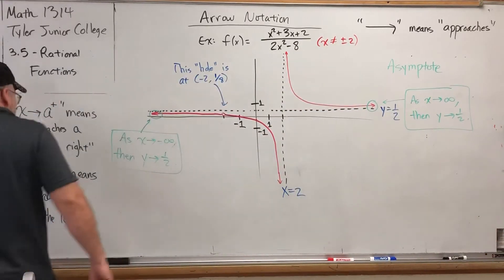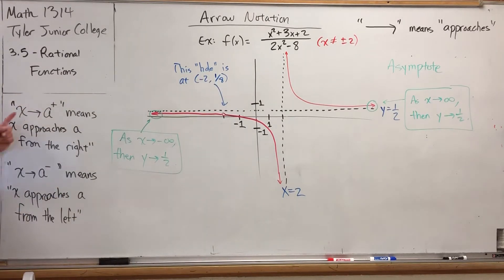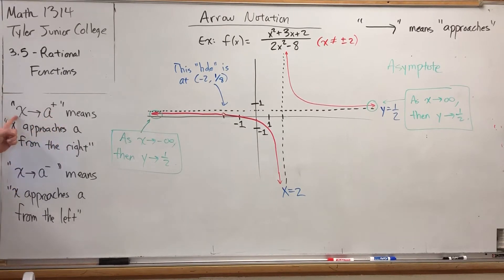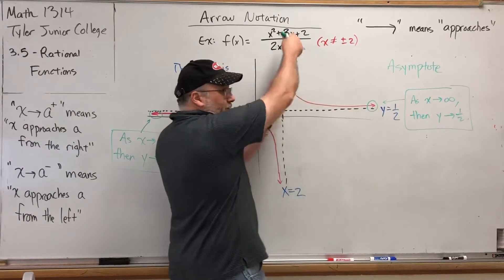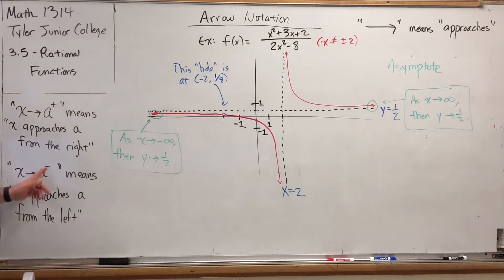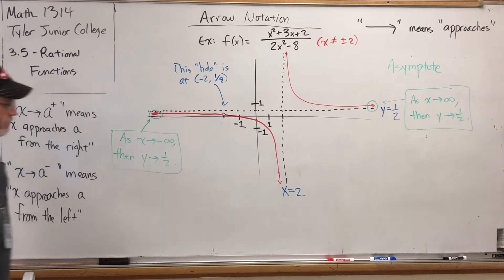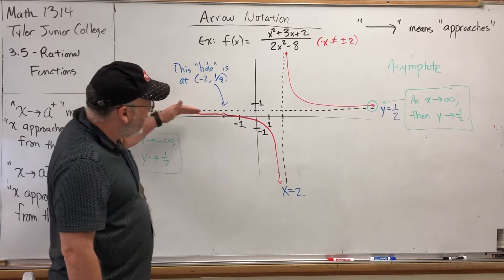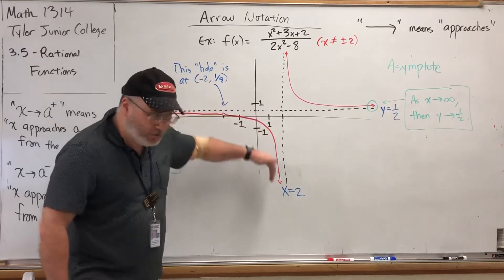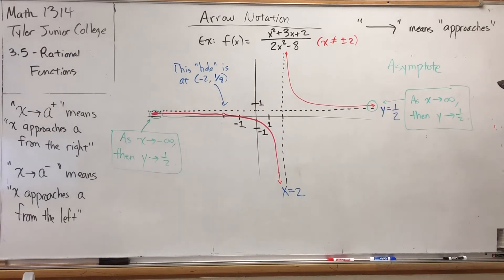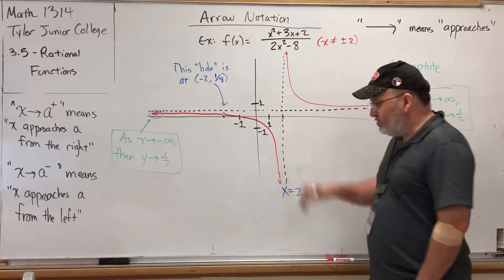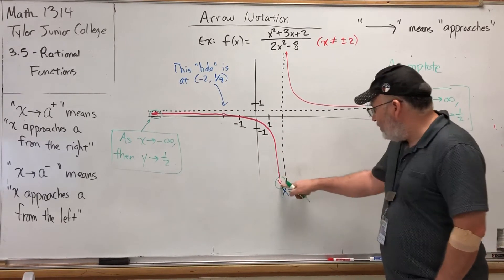The symbols to represent those approaches look like exponents. A positive sign in the exponent means you're approaching from the right — so x pointing to a with a plus superscript means x approaches a from the right. A negative superscript means x approaches a from the left. Now that we have this more specific arrow notation to describe approaching a value from its left or right side, we can describe both behaviors near the vertical asymptote.